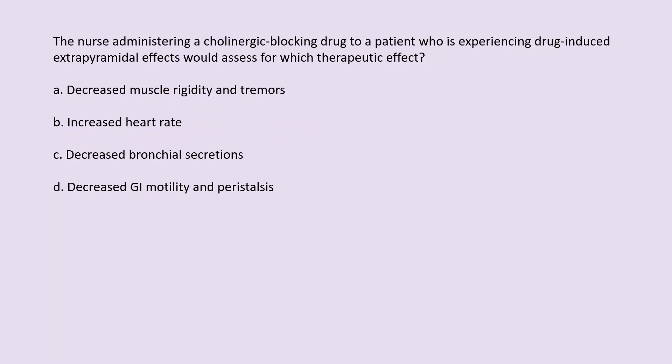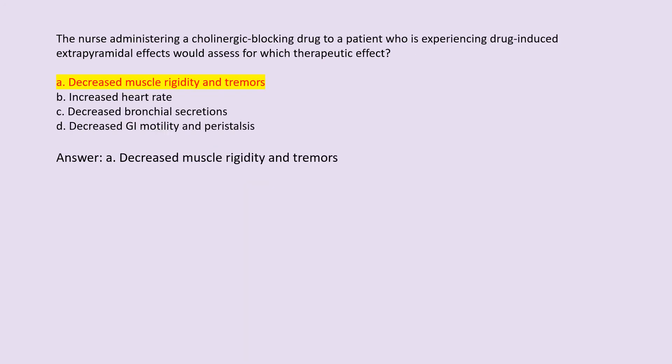The nurse administering a cholinergic blocking drug to a patient who is experiencing drug-induced extrapyramidal effects would assess for which therapeutic effect? A. Decreased muscle rigidity and tremors. B. Increased heart rate. C. Decreased bronchial secretions. D. Decreased GI motility and peristalsis. Answer: A. Decreased muscle rigidity and tremors.